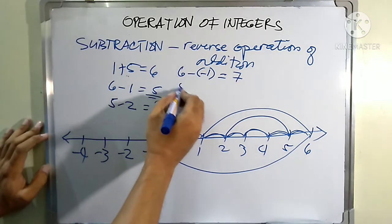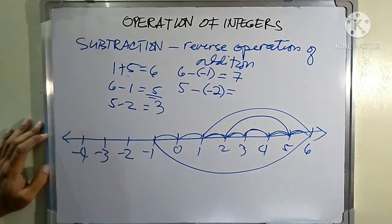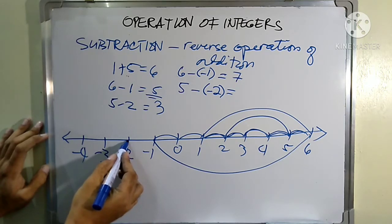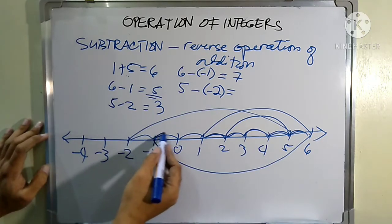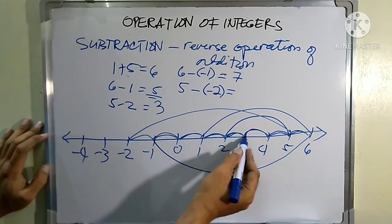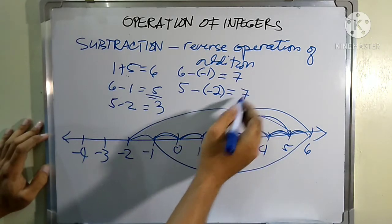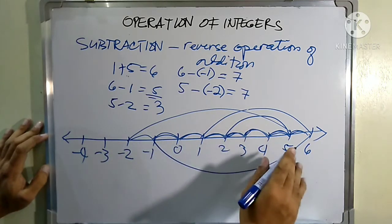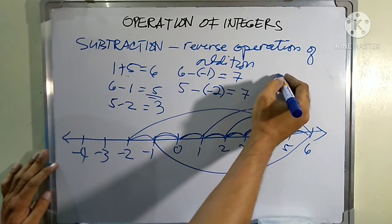Another example: negative five minus negative two. How do we get from negative two to positive five? Let's count: one, two, three, four, five, six, seven — there are seven units from negative two up to positive five. Since it is going to the right, that is positive seven.